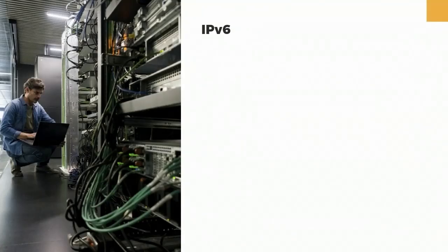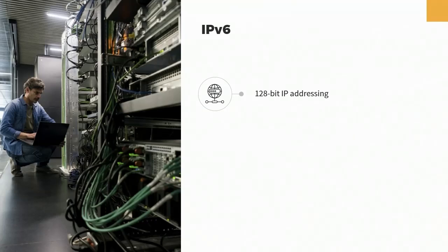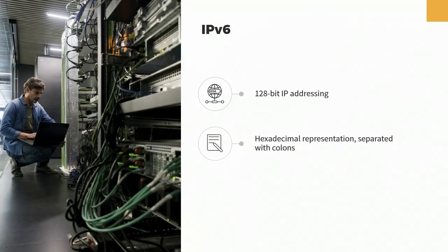A lot of the same concepts apply to IPv6, but there are differences. IPv6 addresses are four times longer than IPv4 — instead of 32 bits, IPv6 addresses are 128 bits long. IPv6 has been around for a couple of decades but has only been widely adopted more recently, and is now built into operating systems including Linux, Windows, and macOS.